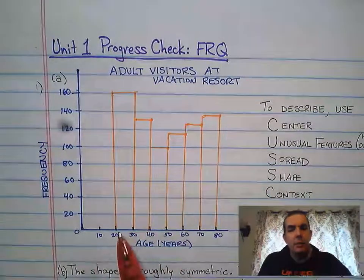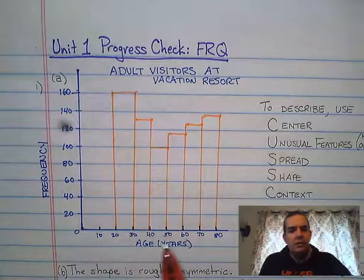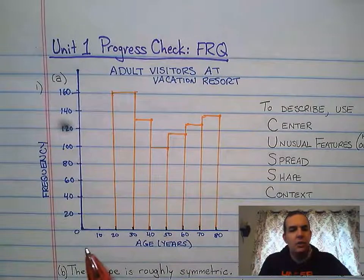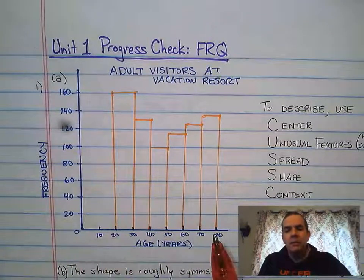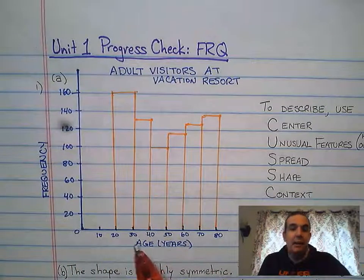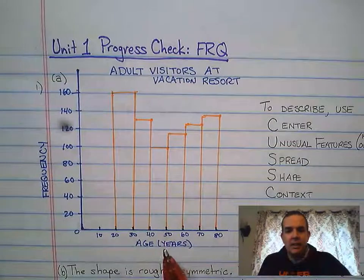Then I followed that up with the horizontal axis along the bottom where I put the age. The ages go from zero again, where we have to start, and went all the way up to 80. I'm counting by 10s because that's how the problem provided the information.